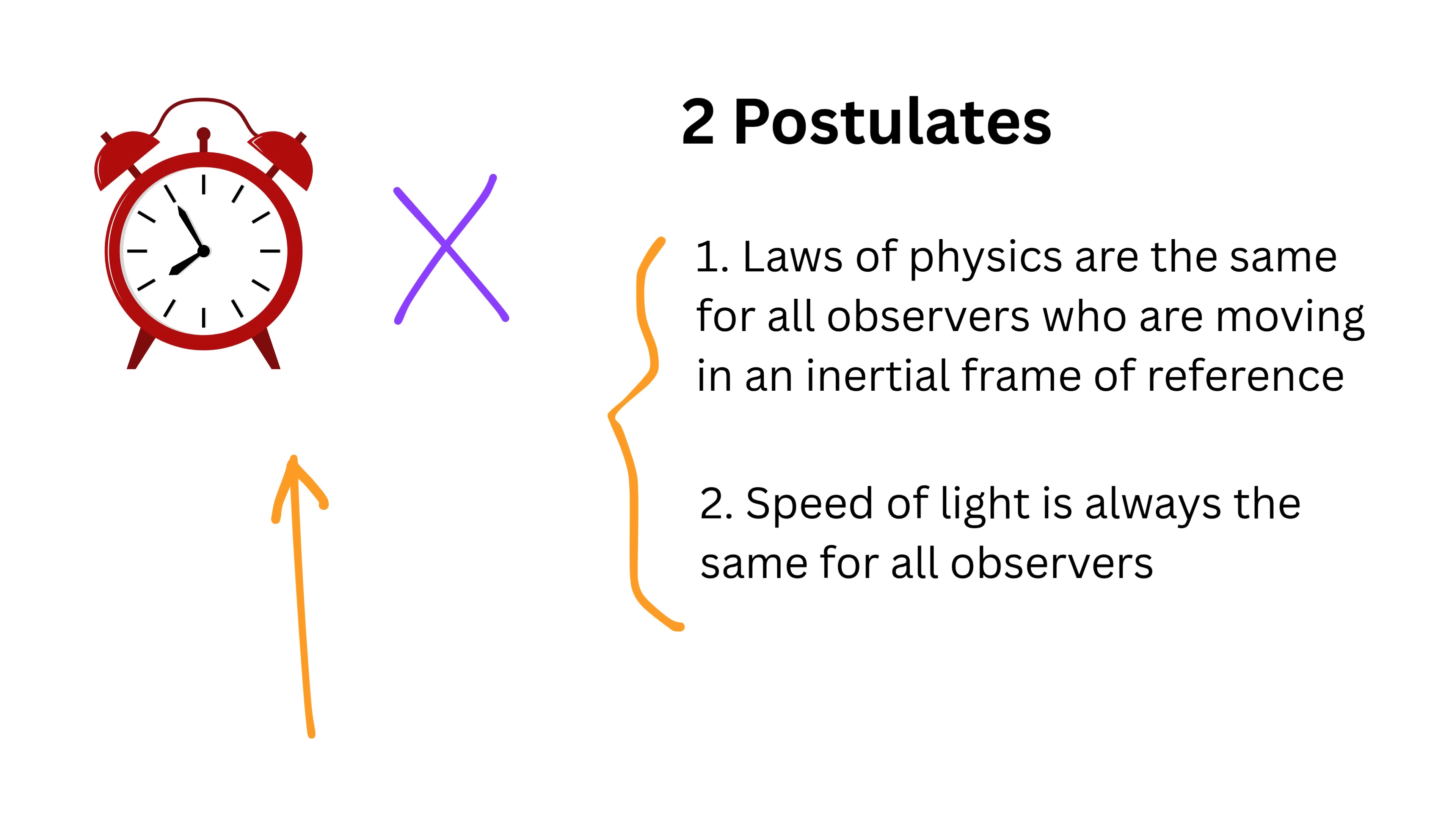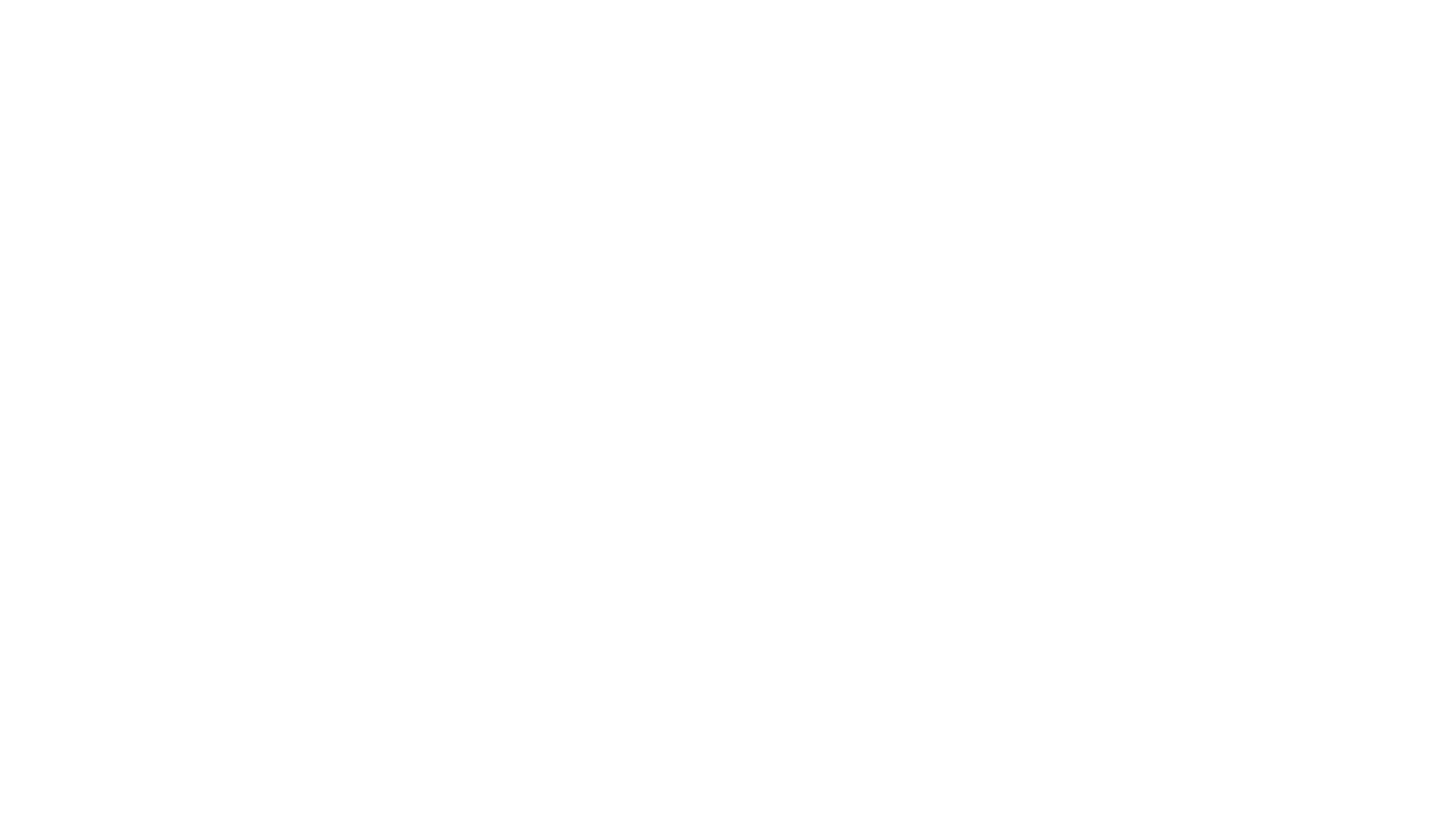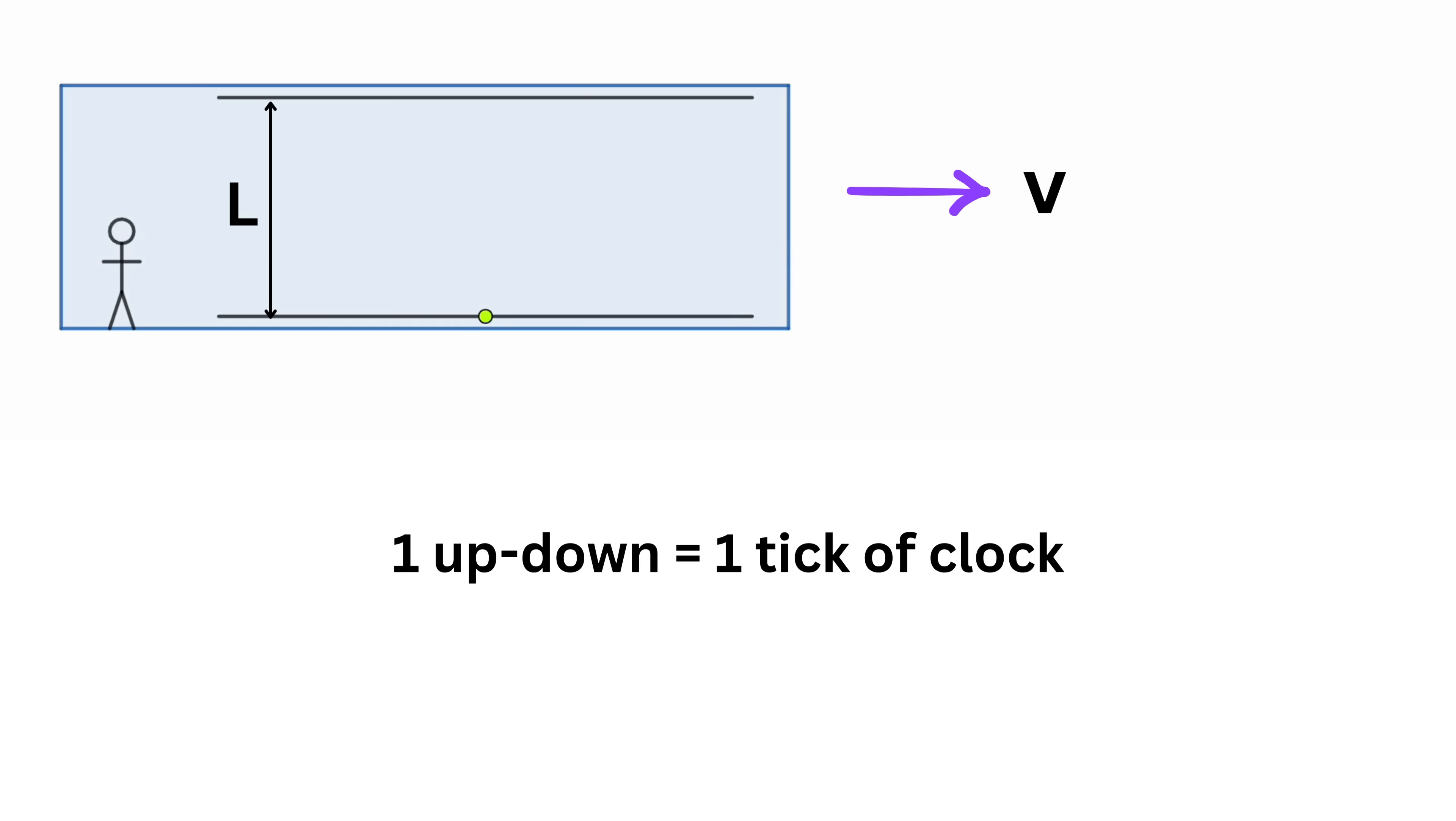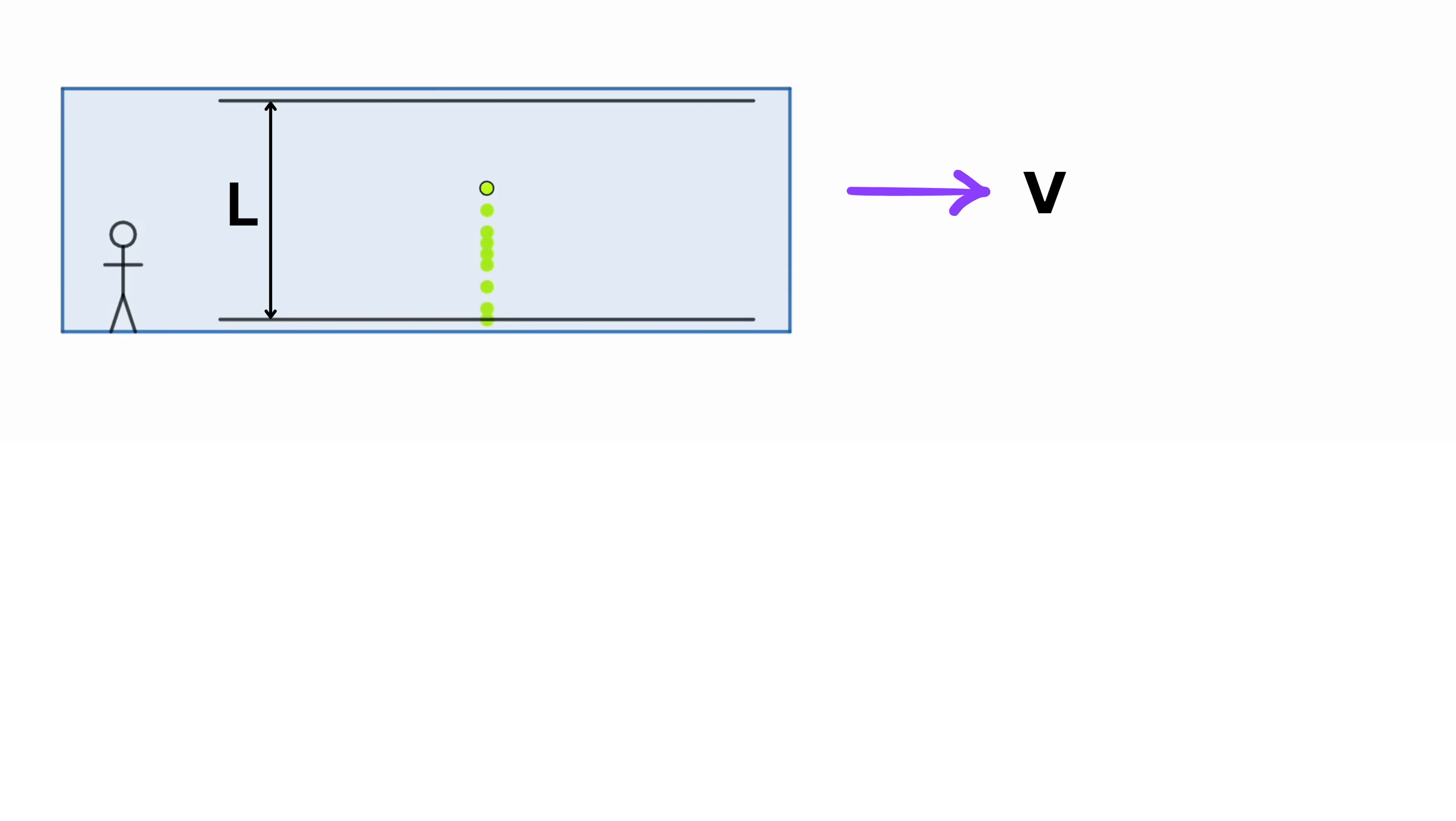Let us end this video by seeing how this time thing is true using these two postulates and simple Pythagoras theorem. Yes, right, Pythagoras theorem is everywhere. So imagine this setup: your friend is inside a spaceship that's moving in a straight line with a constant speed v. Inside that spaceship, your friend builds a simple clock, not a regular ticking one, but a light clock. Here's how it works: there are two mirrors, one on the floor and one directly above it on the ceiling. The distance between them is L. A light pulse bounces up and down between the mirrors. Every time it completes one up-down trip, one tick of the clock has passed. Now from your friend's point of view sitting inside the spaceship, the light is just going straight up and straight down between the mirrors.